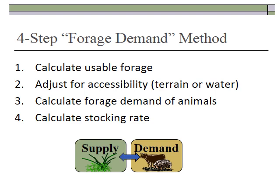Second, consider things that limit the accessibility of that forage by grazing animals, such as terrain and water. Third, understand the demand of the animals — how many animals you have or want to put on the land — and you usually need to include wildlife in that demand equation as well. And then finally, calculate a stocking rate: how many animals you have on the land at any one time, and evaluate that against supply.